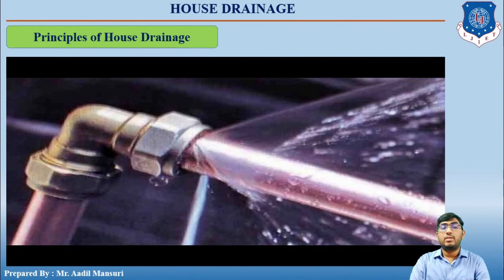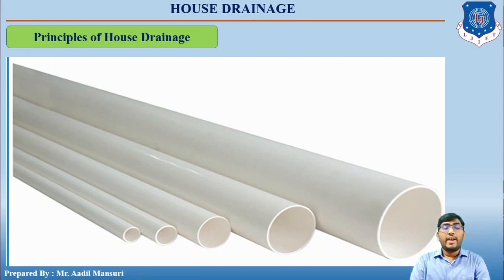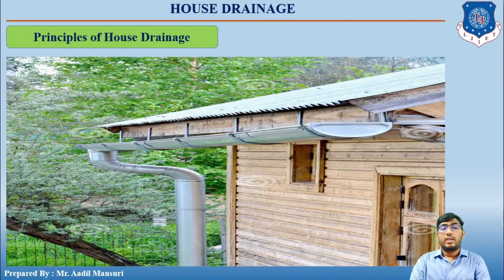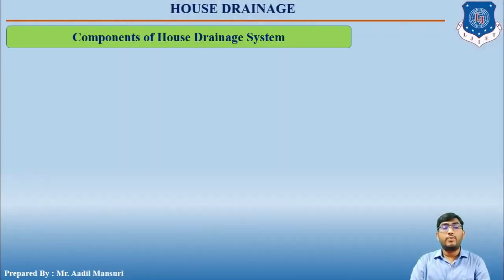Connections should be watertight — leakage causes loss of wastewater and associated problems. Sufficient slope should be given so that wastewater flows under the effect of gravity. Sufficient pipe size should be provided to allow proper flow of wastewater. For collection of rainwater separately, a gutter system can be provided. These were the different principles of house drainage.